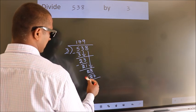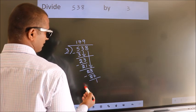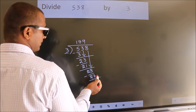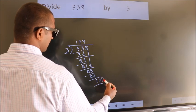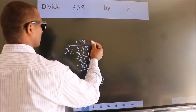Now we subtract. We get 1. No more numbers to bring it down. So we stop here. This is our remainder. This is our quotient.